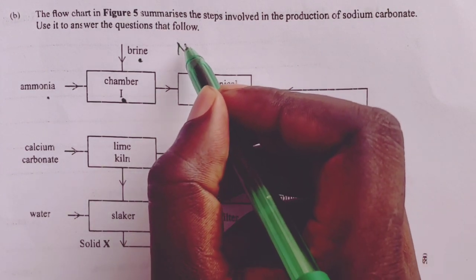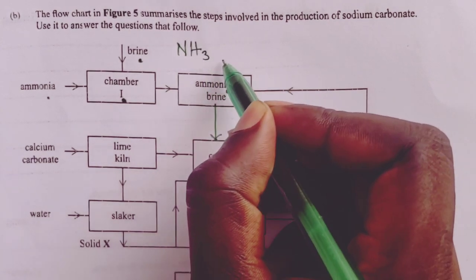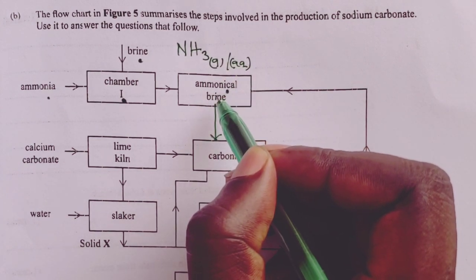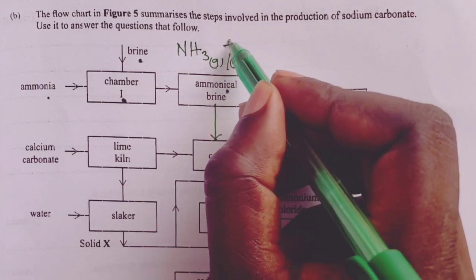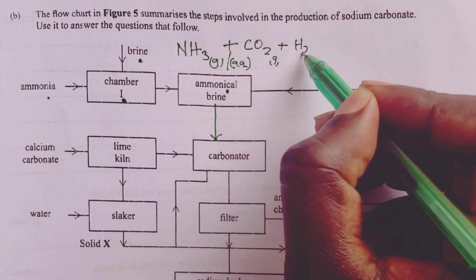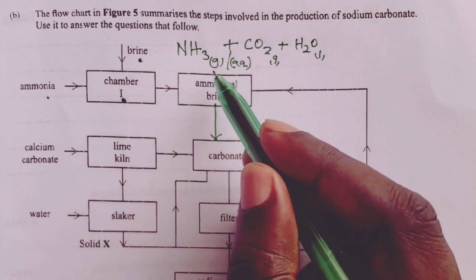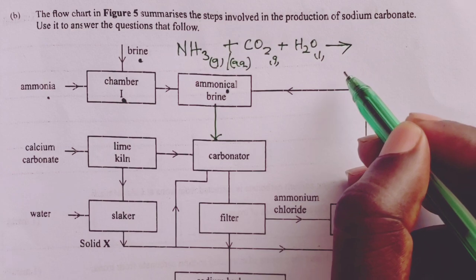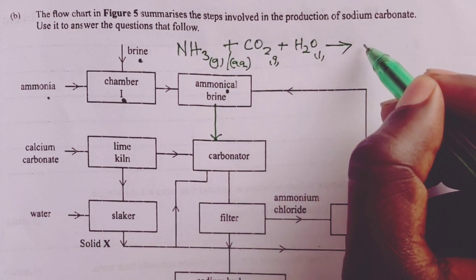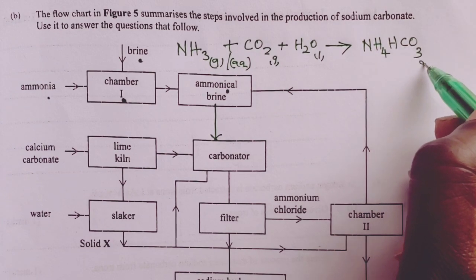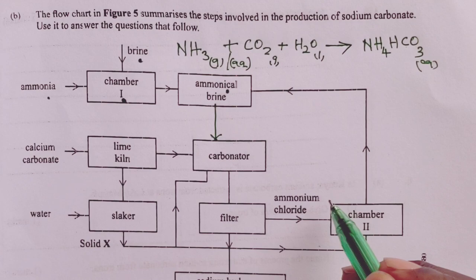The first reaction that occurs is that ammonia, either in gaseous form or we also accept aqueous state because it will be dissolved in brine, reacts with carbon 4 oxide gas and water. Of course, water we obtain from brine. Brine is a concentrated solution of sodium chloride, so meaning that there is some water in. When these three substances react, we get ammonium hydrogen carbonate in aqueous state.